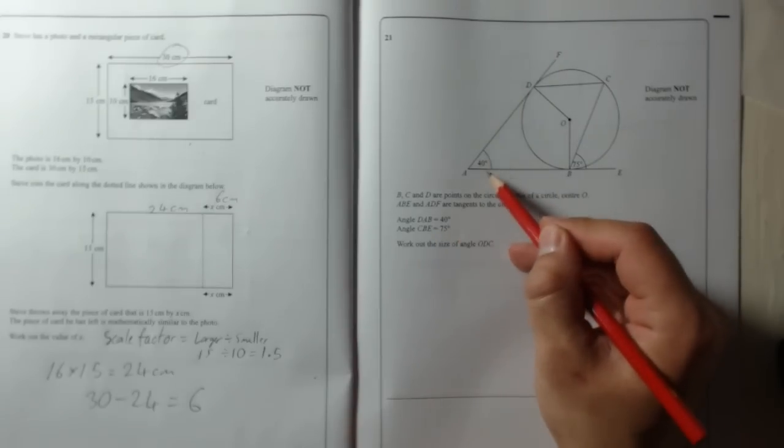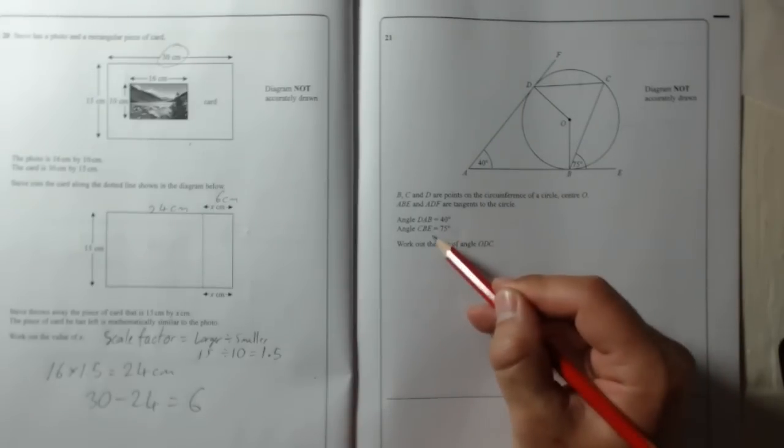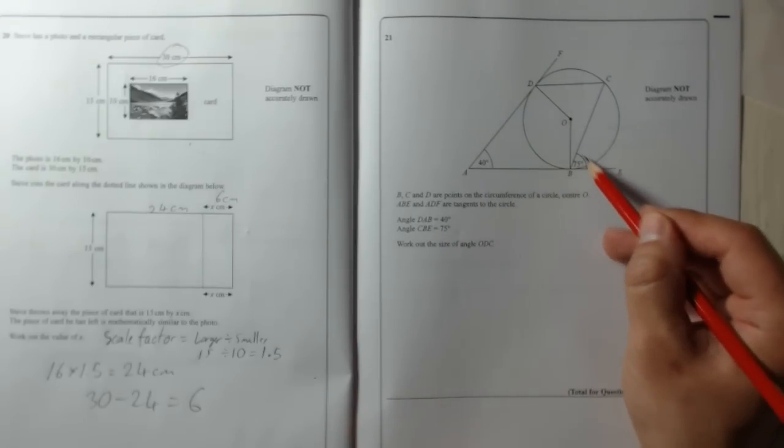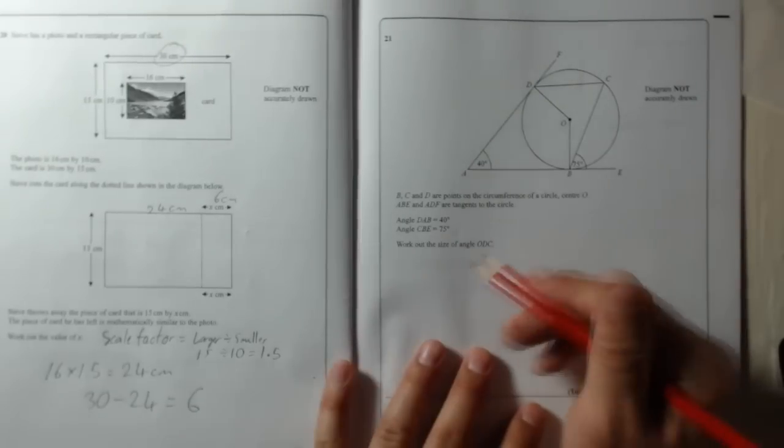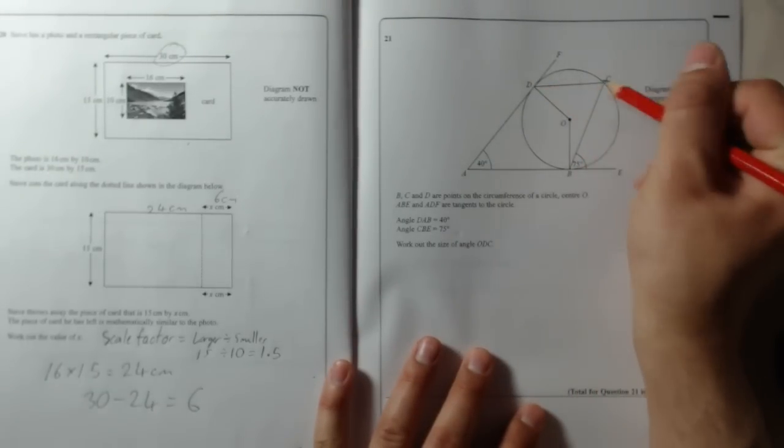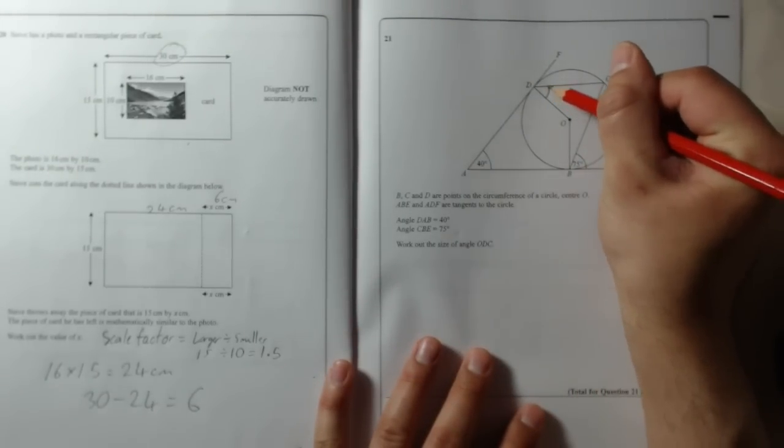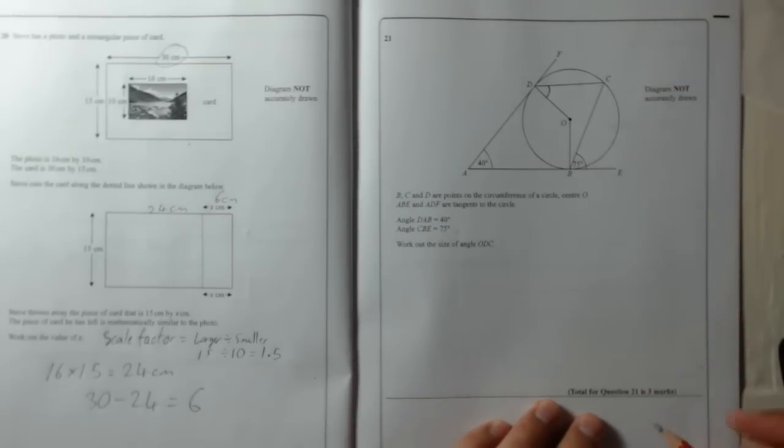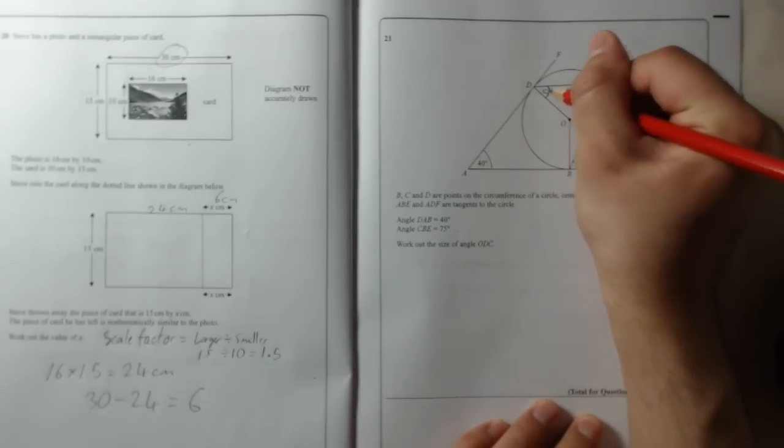DAB is 40 degrees, so that's there. And CBE is 75, so that angle there is 75. Work out the size of angle ODC. So O to D to C, so that is this angle here. Let's just call that X.